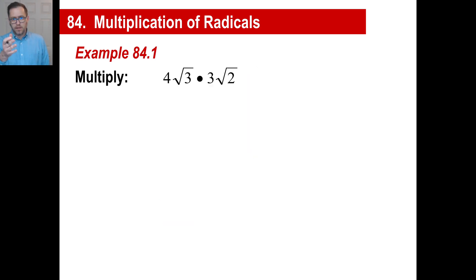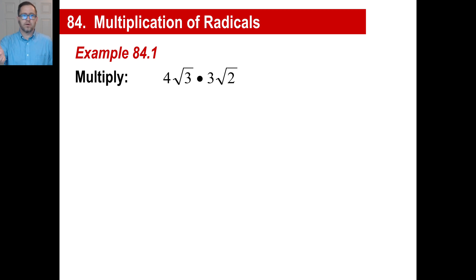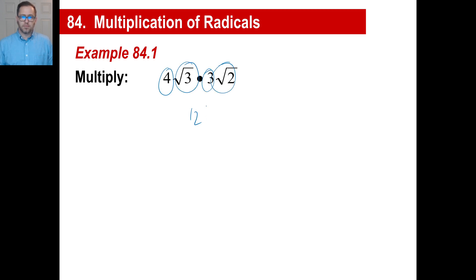Now we'll use that to do something like this. You treat it just like 4x times 3y. Take the outside numbers and multiply to get 12, then take the radicands and multiply to get the square root of 6. That's all we do.